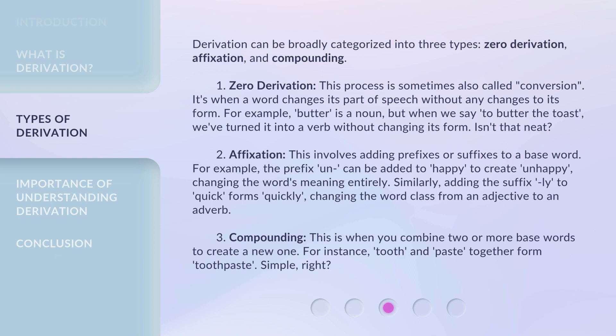1. Zero derivation. This process is sometimes also called conversion. It's when a word changes its part of speech without any changes to its form. For example, 'butter' is a noun, but when we say 'to butter the toast,' we've turned it into a verb without changing its form. Isn't that neat?